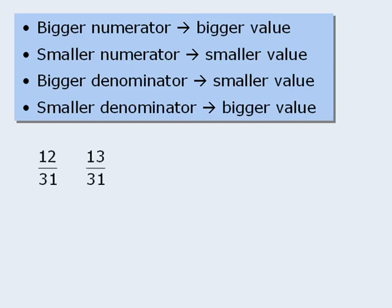Let's try a few examples. These two fractions have identical denominators, but their numerators are different. As such, we can use the properties to determine which fraction has the greater value. Since the fraction on the right has the bigger numerator, it must have the greater value. Now, these two fractions have identical numerators but their denominators are different. Since the fraction on the left has the smaller denominator, it must have the greater value.